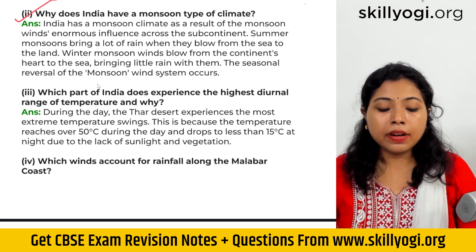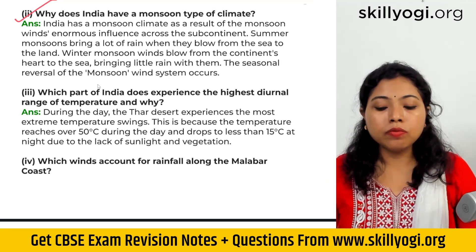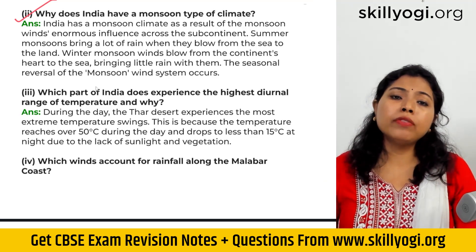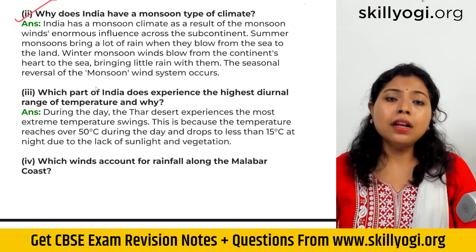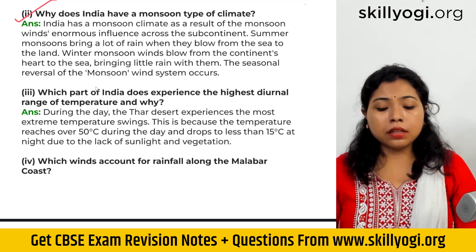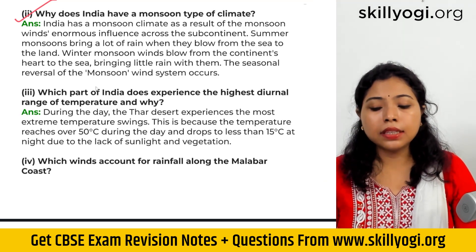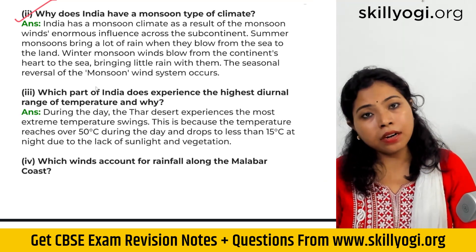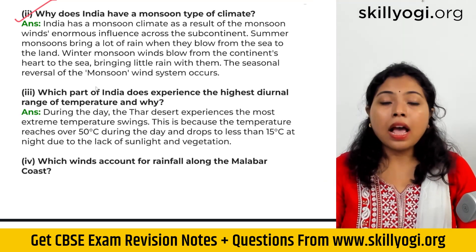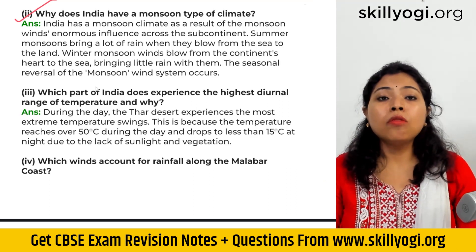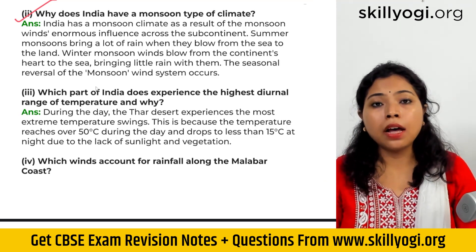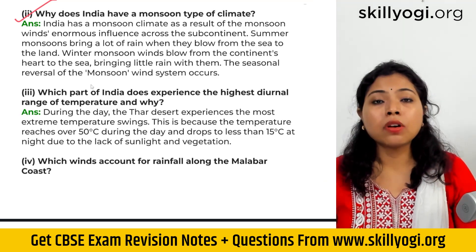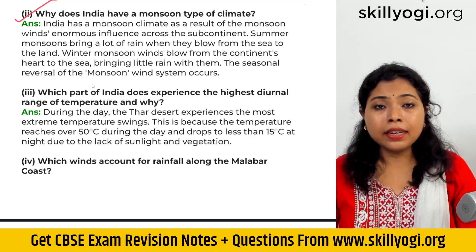The seasonal reversal of the monsoon wind system occurs, so bi-seasonally the monsoon winds occur in India. In summer and rainy season, we see the southeastern and southwestern part of the monsoon. In winter season, we observe the northeastern part of the monsoon winds, which affects all the climate of India.